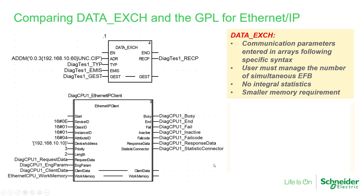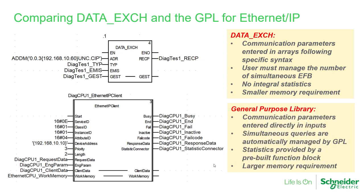For the GPL function blocks, one big advantage is that communication parameters — service ID, class, instance, and attribute — are entered directly as values in four input pins. A port profile function block manages how many simultaneous queries are sent out the communication port, reducing the need for custom logic. There is also an additional statistic counter function block that calculates statistics related to each client function block.